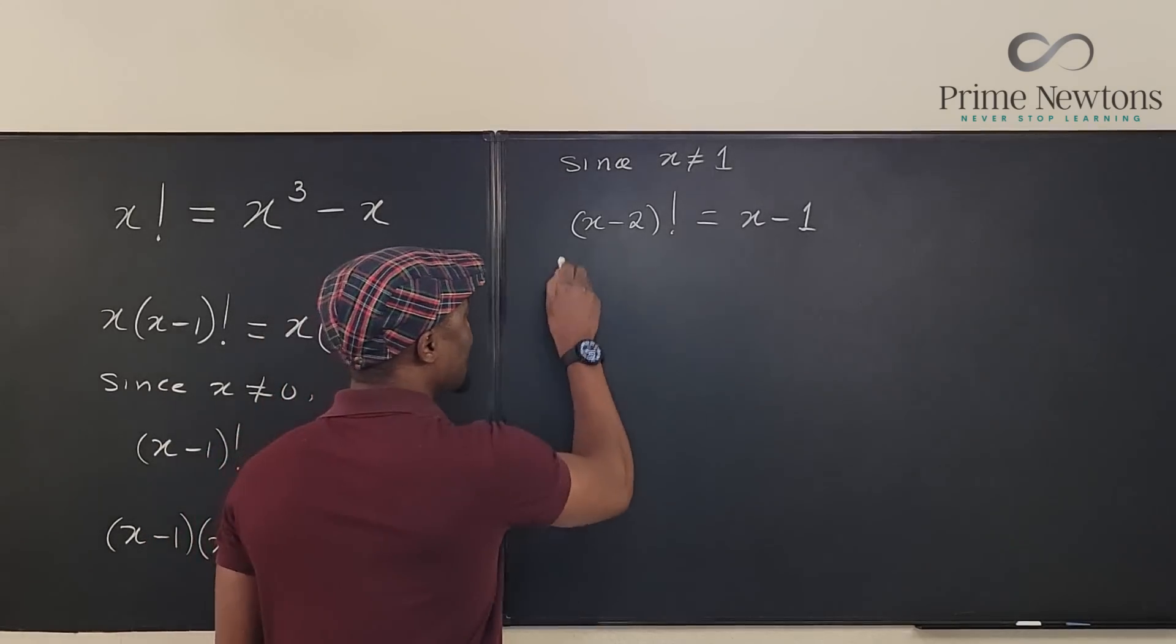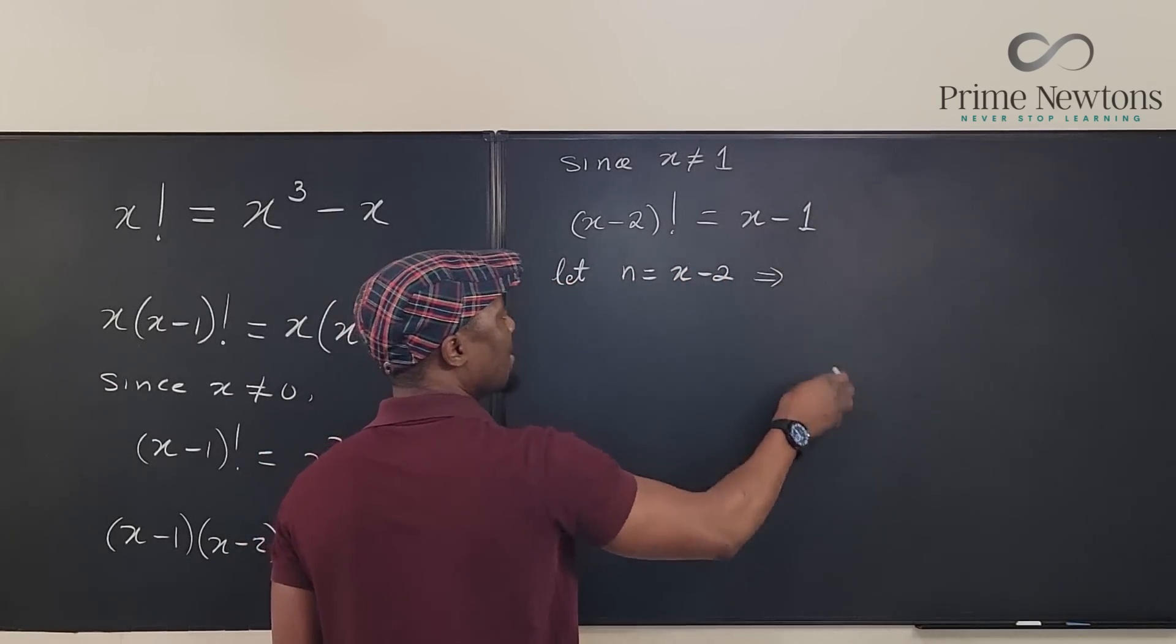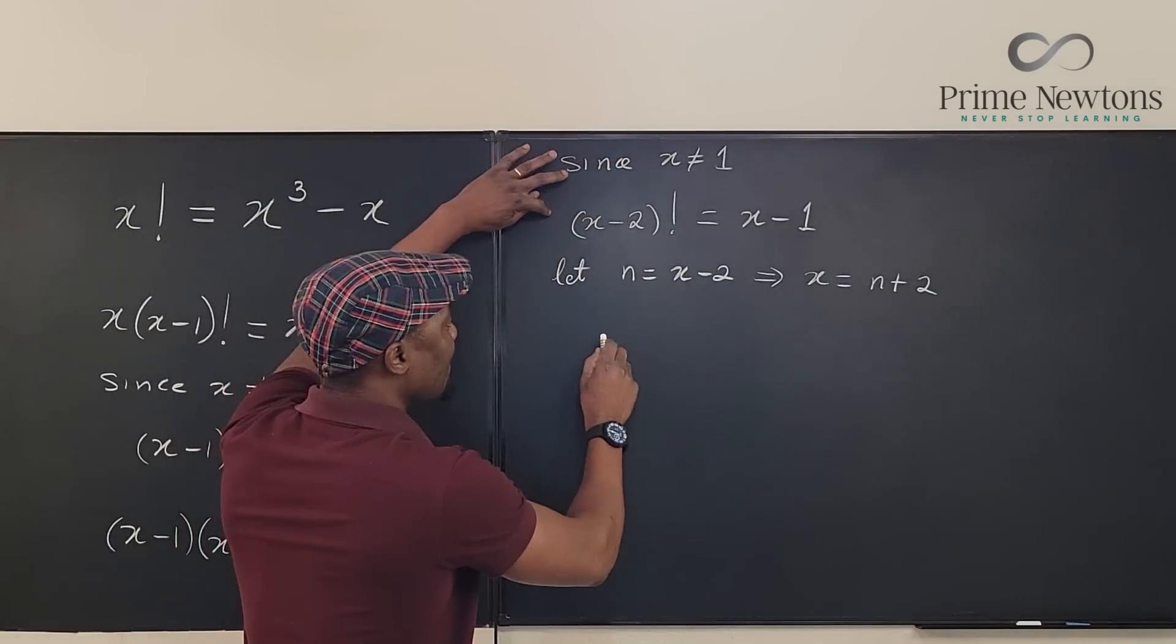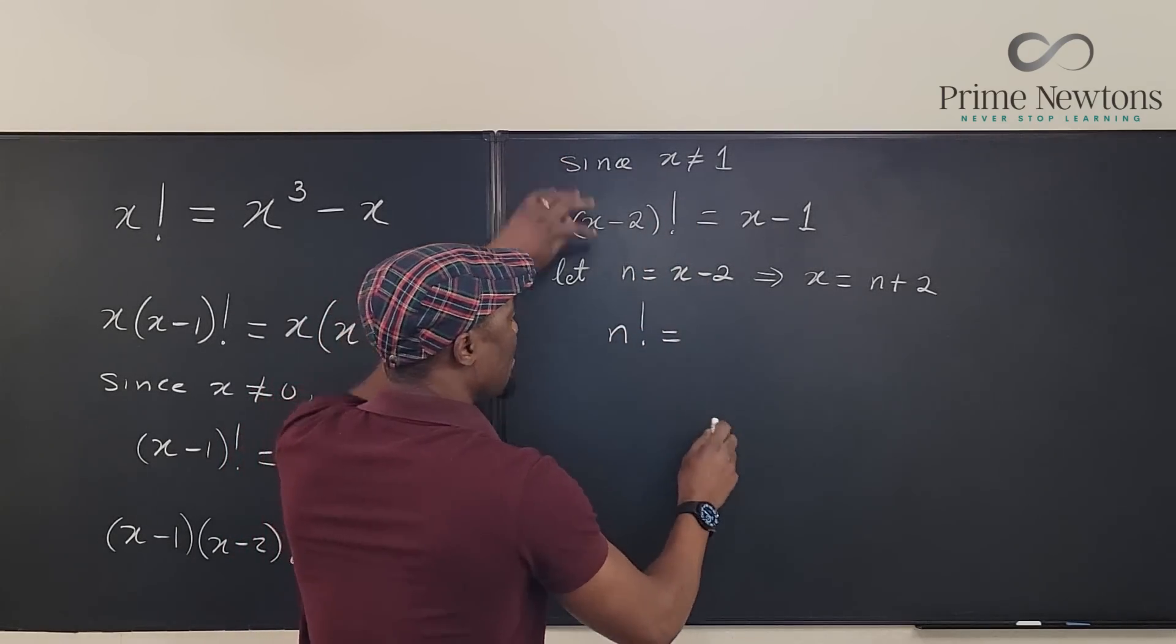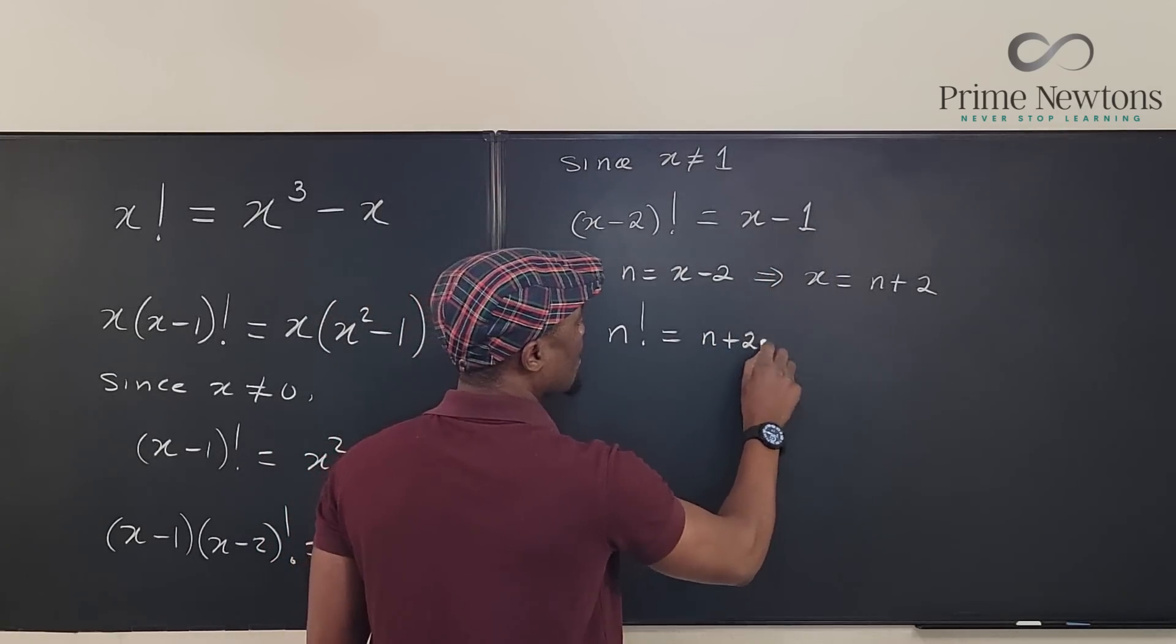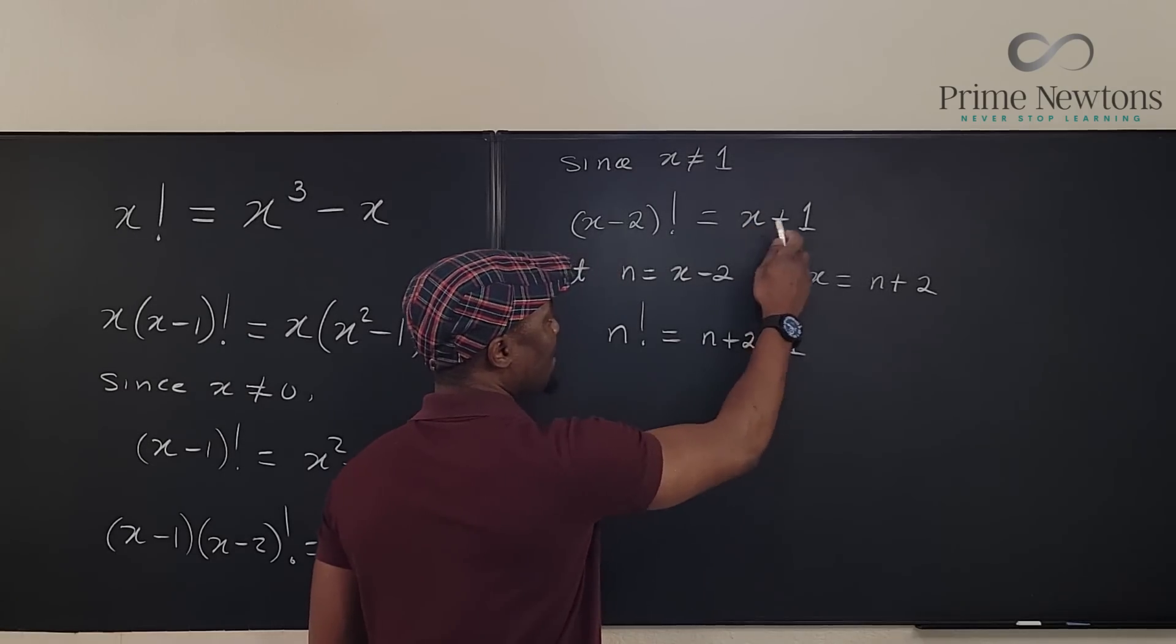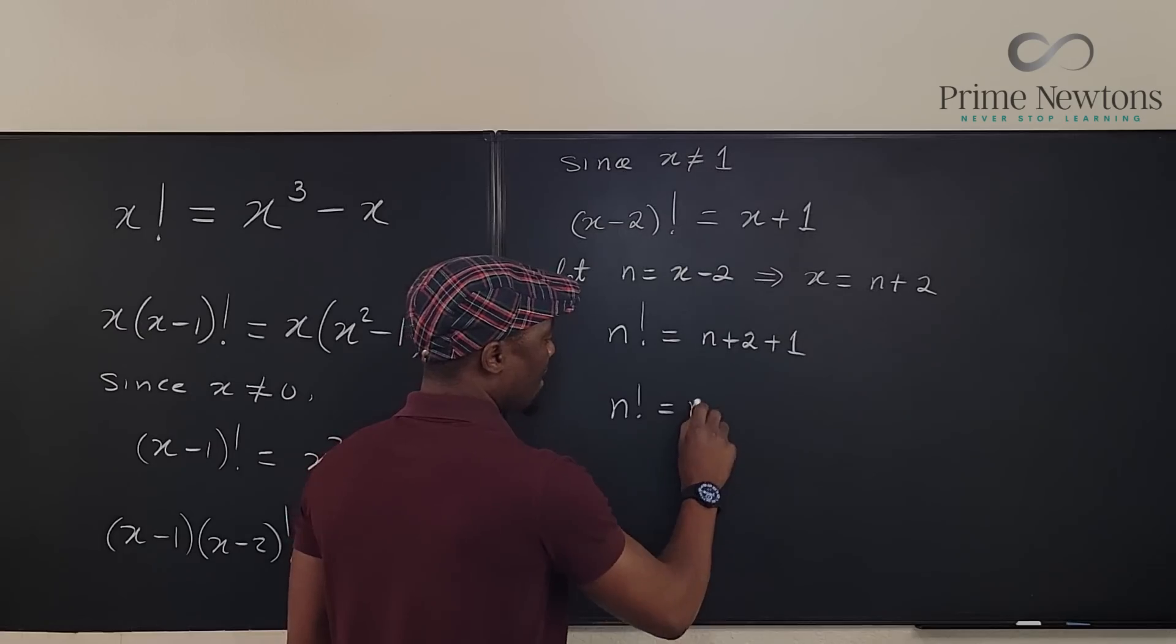So let's say let n be equal to (x-2), which implies if I need to replace this, I mean that x will be equal to (n+2). So now I can rewrite this line as instead of writing (x-2) factorial, I'm going to write n factorial is equal to (x+1) is going to be (n+2) plus one. So this (x+1) is (n+2+1). So I have n factorial is equal to (n+3).